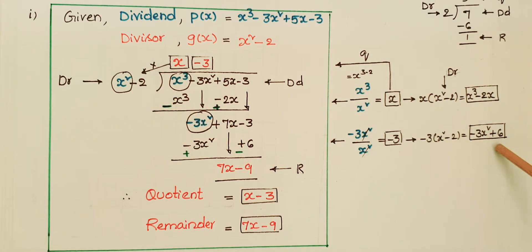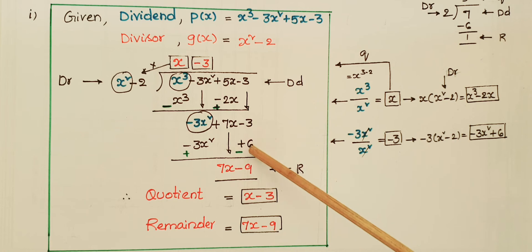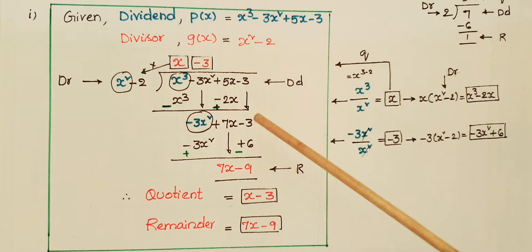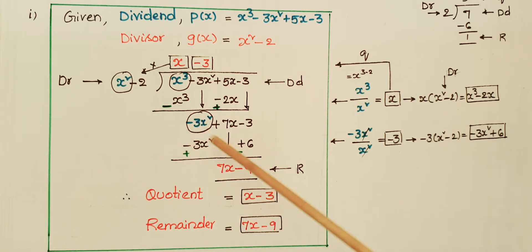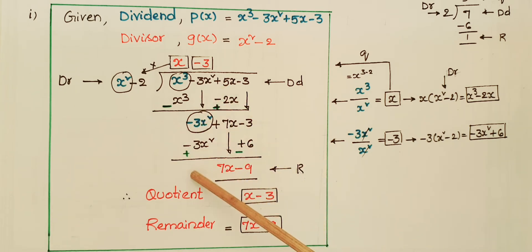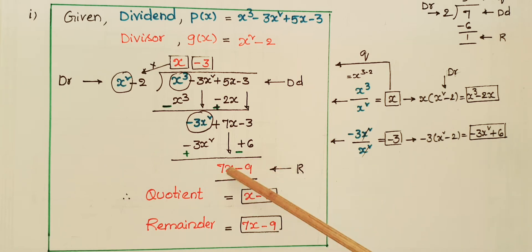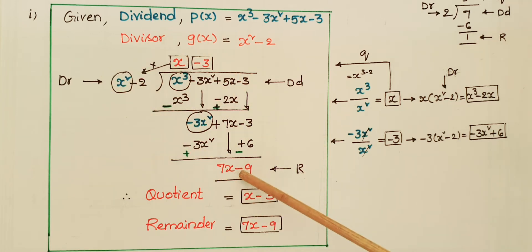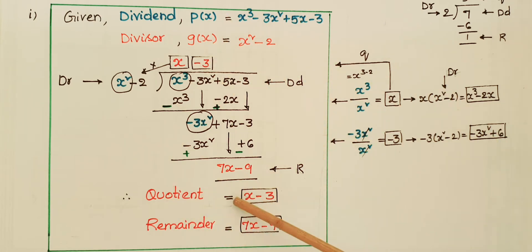Multiply -3 with (x² - 2): -3 times x² = -3x², and -3 times -2 = +6. Write -3x² and +6, then subtract by changing signs. -3x² + 3x² = 0, bring down +7x, and -3 minus 6 = -9. The remainder is 7x - 9. Since 7x has degree less than x², we stop. Quotient = x - 3, remainder = 7x - 9.